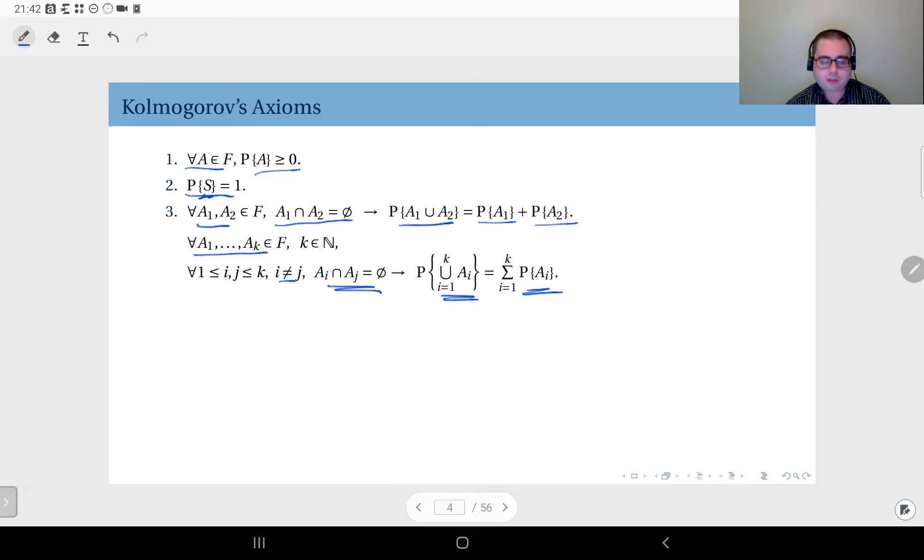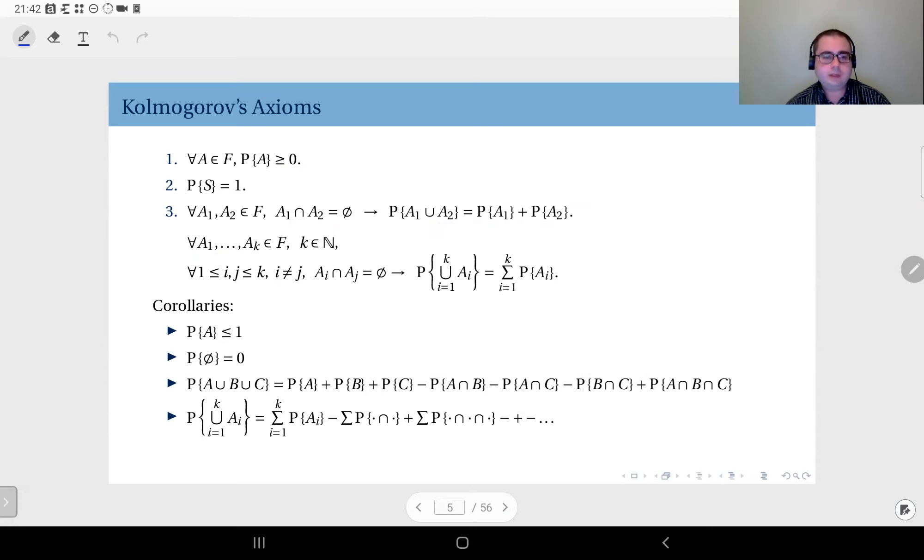For instance, any probability is upper bounded by one. So for any event A, probability of A is less than or equal to one. This is not an axiom but a result of the axioms. And the probability of the empty set, which can be recognized as an event, but the probability we should assign to this should be zero.